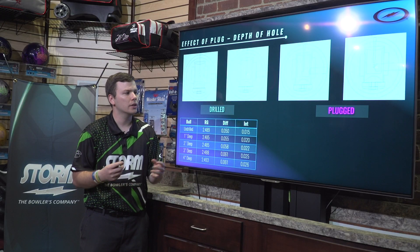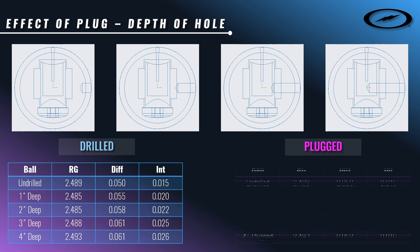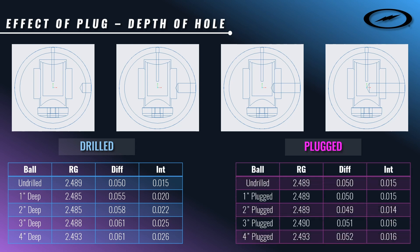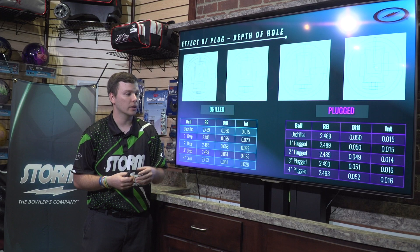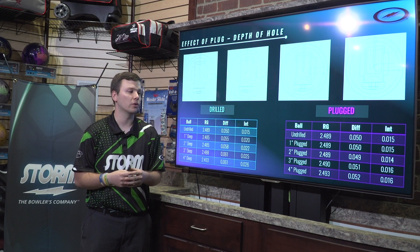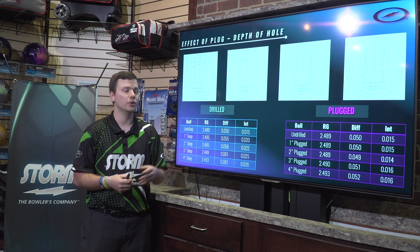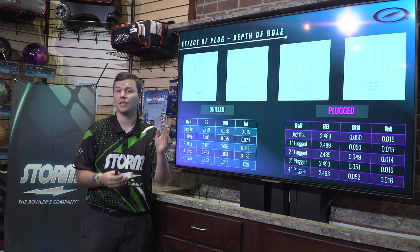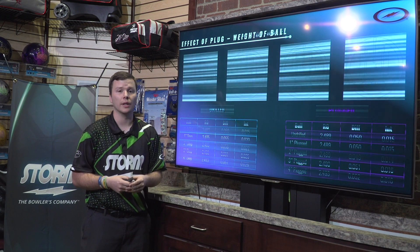Moving over to the plugged numbers, the RG value gets a little bit higher, especially as that hole gets deeper and deeper. For total differential, in all these simulations the most we've seen come through is 52 total diff — and we were all the way up at 61. Your customer is going to see a big difference between a ball with 61 differential with a balance hole compared to a plugged ball with 52 differential. Intermediate differential behaves the exact same as total differential, using the Y and Z axis as the reference. Depth of the hole is extremely important.